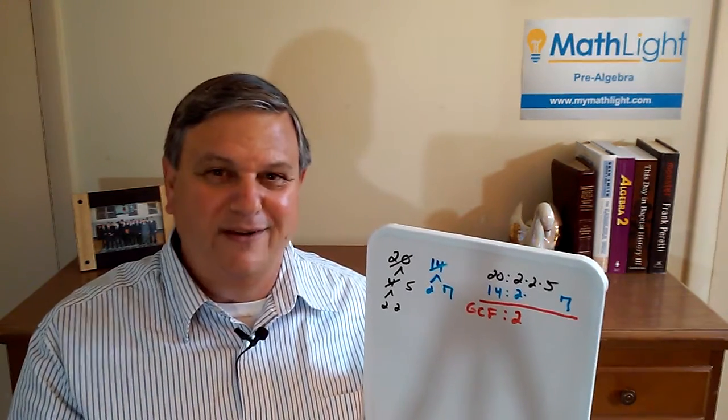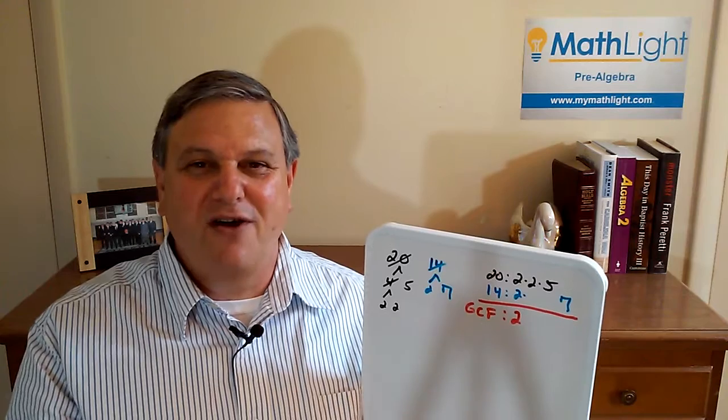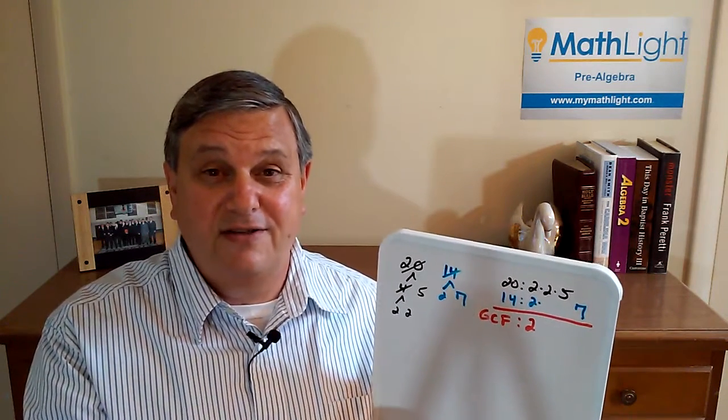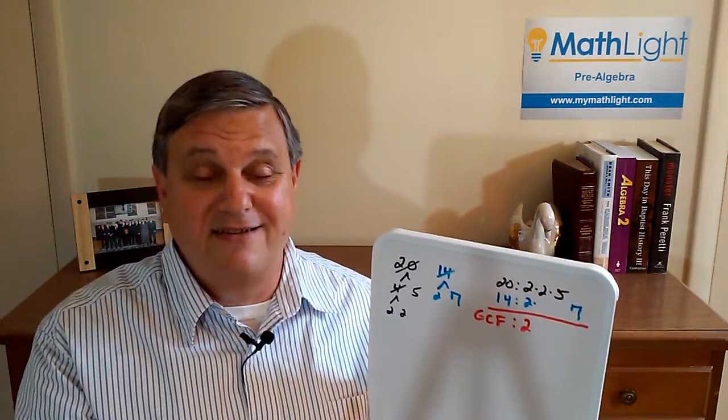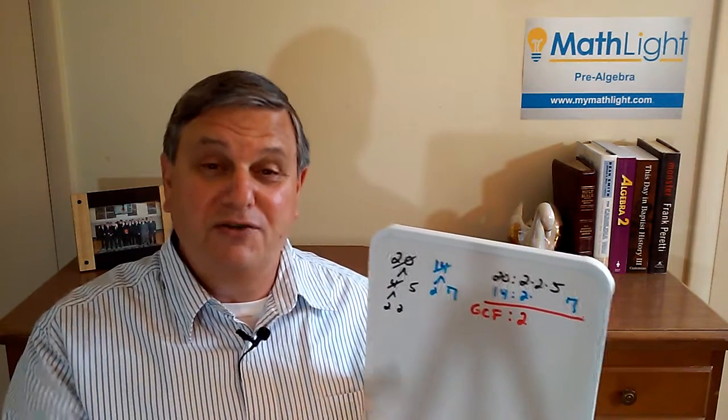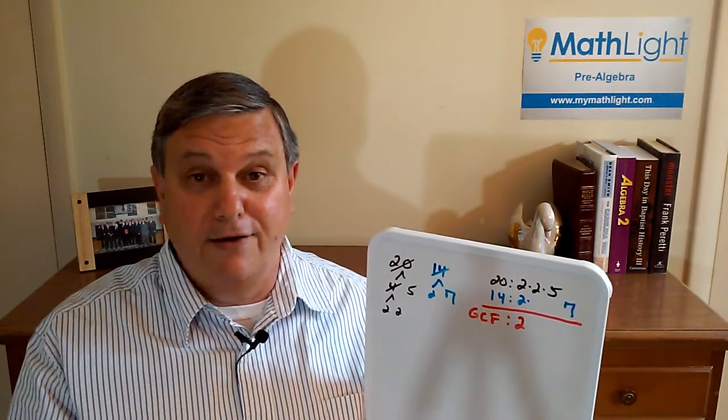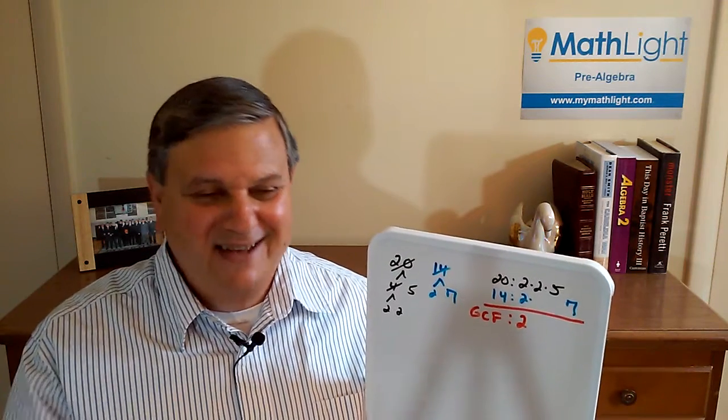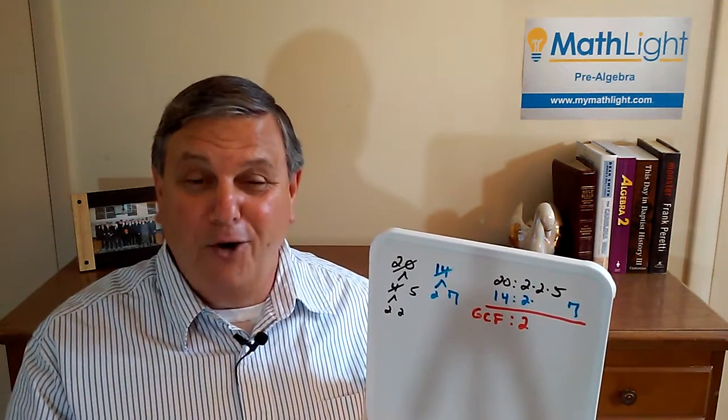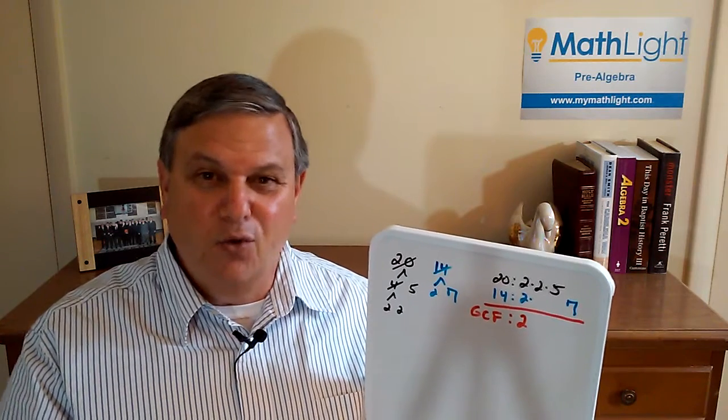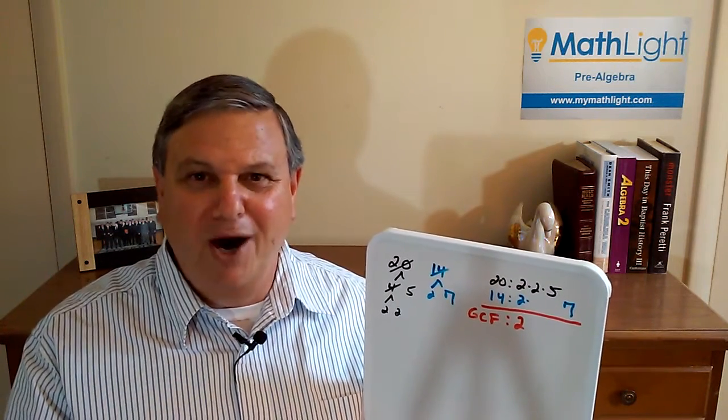So these are the things that we try to do at MathLight. We try to illustrate these concepts and practices so that the students will understand what's going on and be able to apply these principles in related areas. That's the key to math. Hey, you could do that in your classroom. I hope you'll give it some consideration. We're here at MathLight. We want to be a help to you.